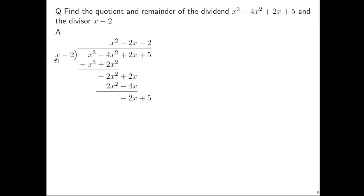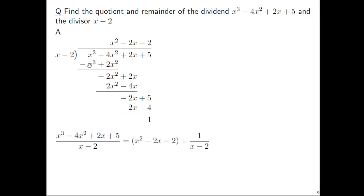Negative 2 times the quantity x minus 2 would be negative 2x plus 4. But since we're going to need to subtract it, let's distribute a minus 1 into negative 2x plus 4 and have positive 2x minus 4. Then we can add: negative 2x plus 2x is 0, and 5 plus negative 4 is positive 1. In the end, x cubed minus 4x squared plus 2x plus 5 all divided by x minus 2 is the quotient x squared minus 2x minus 2, plus the remainder of 1 over x minus 2. You should check — take x squared minus 2x minus 2 over 1 plus 1 over x minus 2, create a common denominator, and see if you really get x cubed minus 4x squared plus 2x plus 5 all over x minus 2.